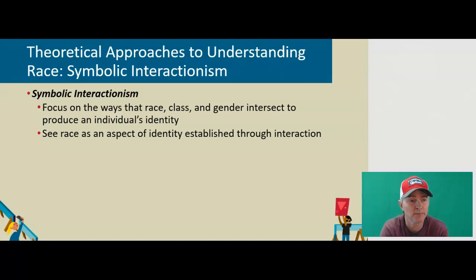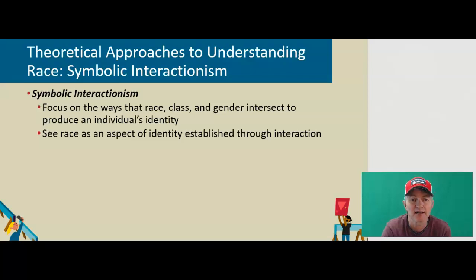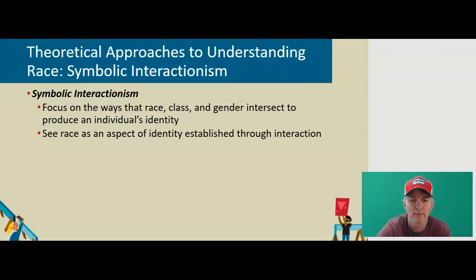Symbolic interactionism focuses on the ways that race, class, and gender intersect to produce an individual's identity. They see race as an aspect of identity established through interaction. There are several different ways that we project and receive our racial and ethnic identity. This theory states that race and ethnicity are part of our presentation of self — they are who we are. Not necessarily biologically different, but just how we construct our own identities.